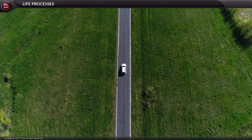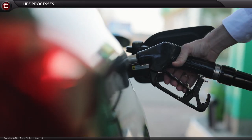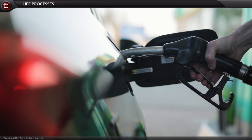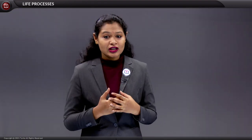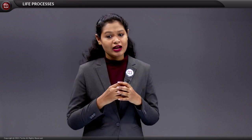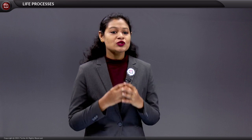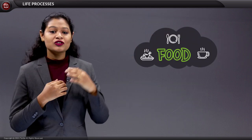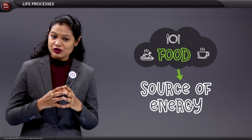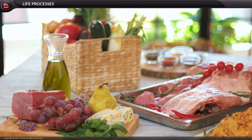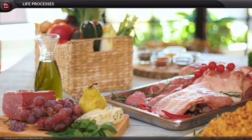Let me ask you a question: how does a car move? We provide an external source of energy in the form of fuel to a car so that it can move. Similarly, we require something to be given externally into our body so that the processes happen smoothly. So we consume food, which is the source of energy. There is a variety of food available, including macronutrients and micronutrients.